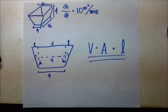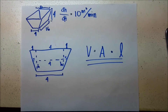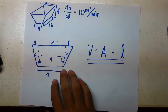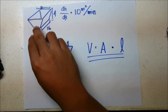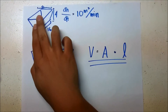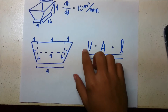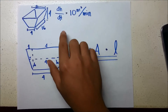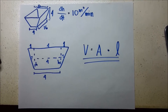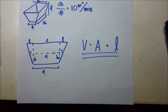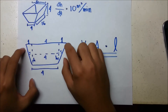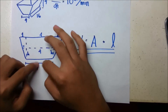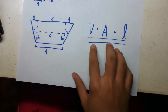A horizontal trough is 16 meters long and its ends are isosceles trapezoids with an altitude of 4 meters, a lower base of 4 meters, and an upper base of 6 meters. Water is being poured into the trough at a rate of 10 cubic meters per minute. How fast is the water level rising when the water is 2 meters deep?